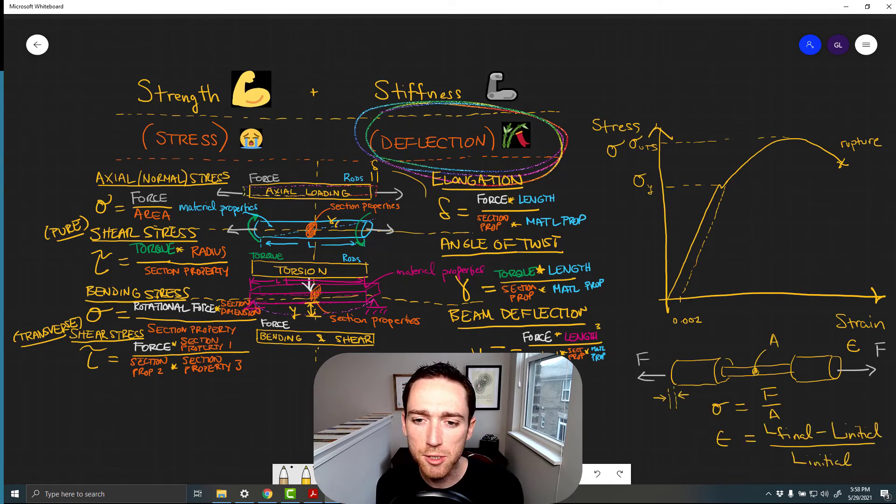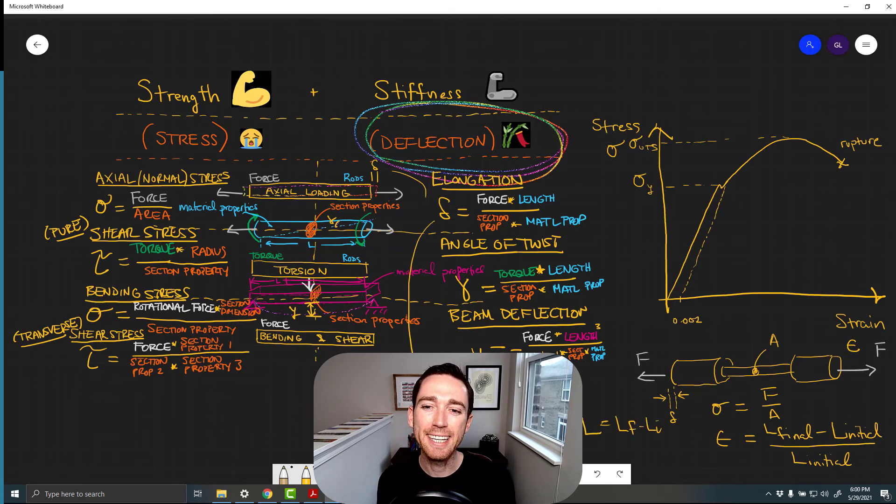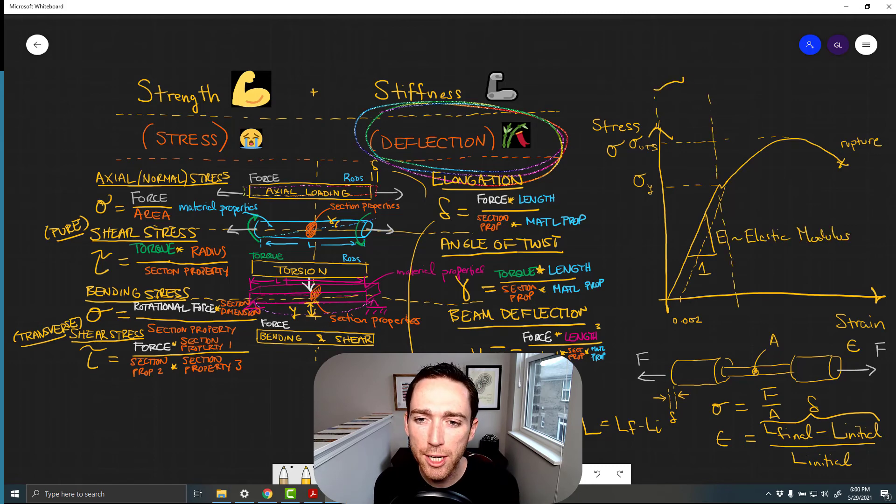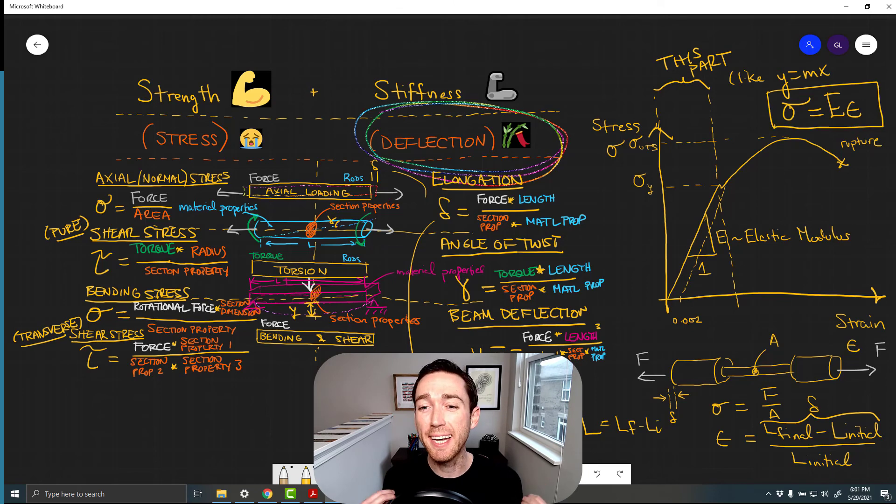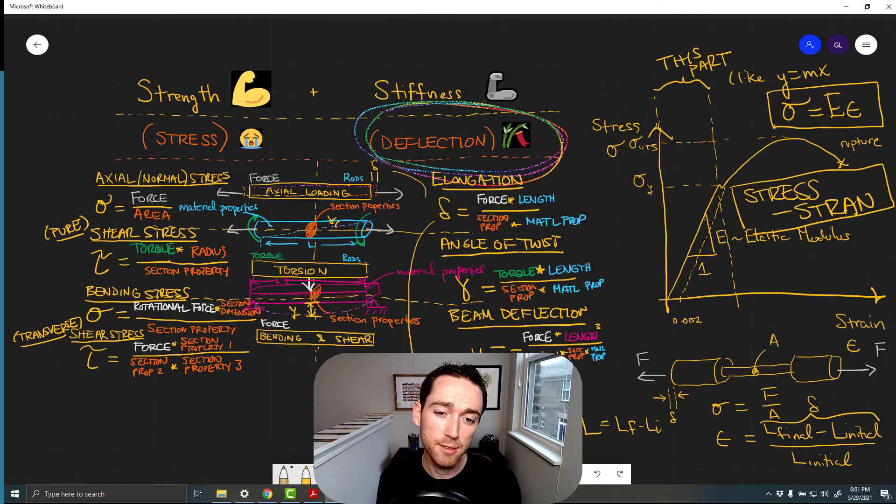And the interesting thing about this curve is that we always want to stay in the linear domain, the range where it's not broken yet. And that's exactly where we see that stress and strain are connected by the letter E, which represents our stiffness.